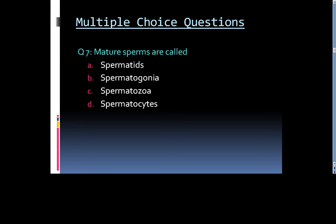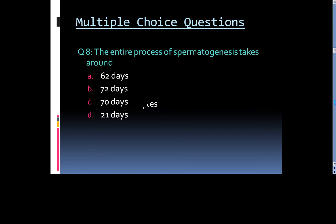Question 8: The entire process of spermatogenesis takes around: Option A. 62 days, Option B. 72 days, Option C. 70 days, or Option D. 21 days.